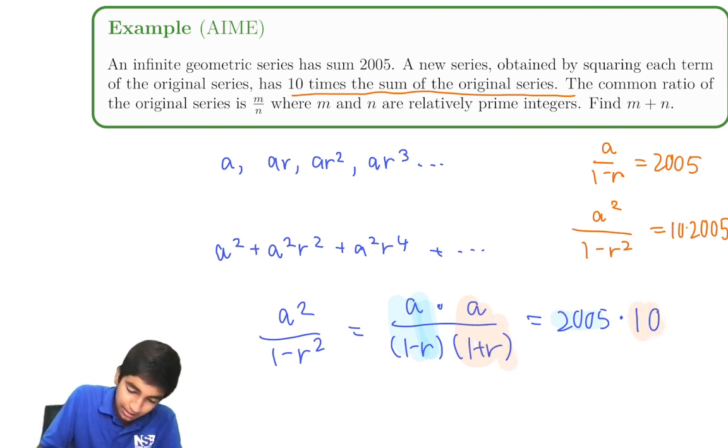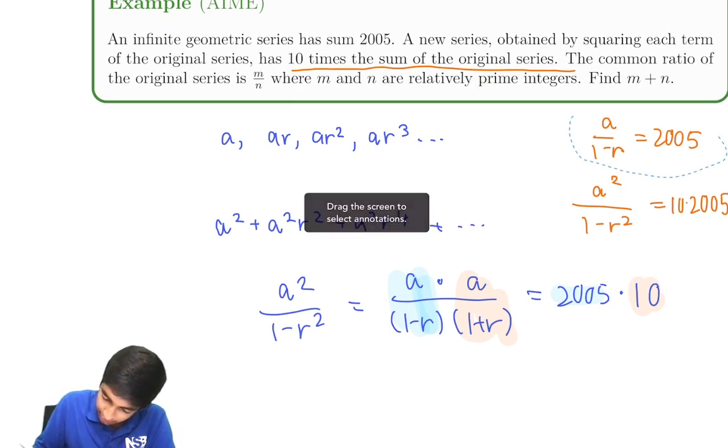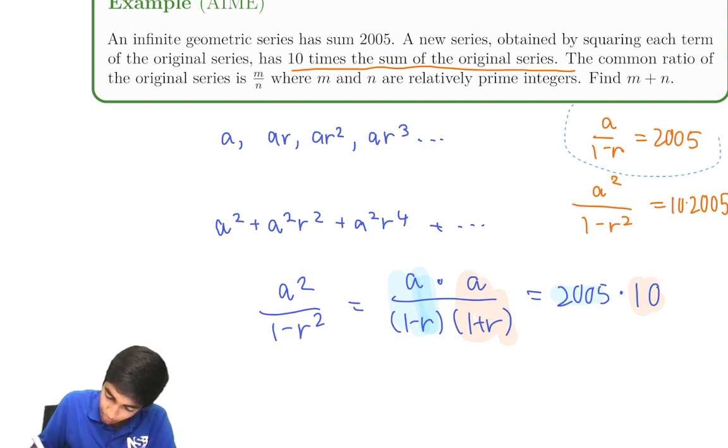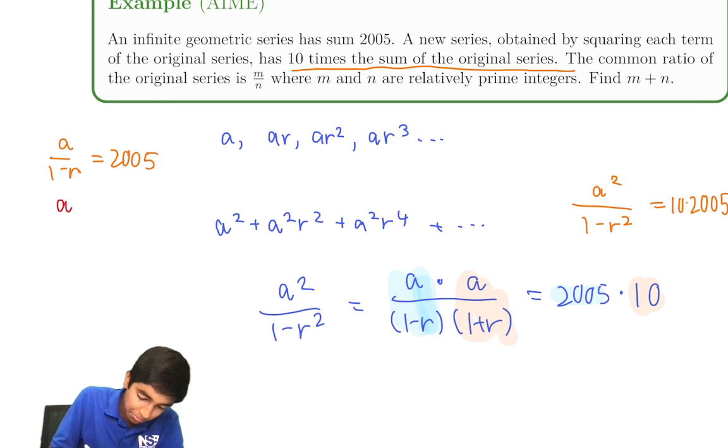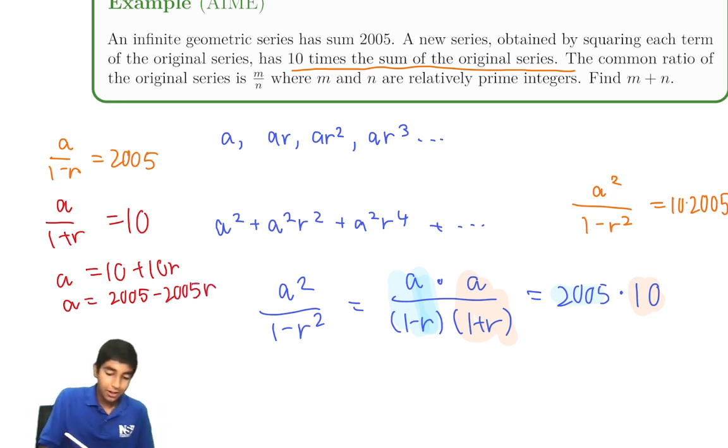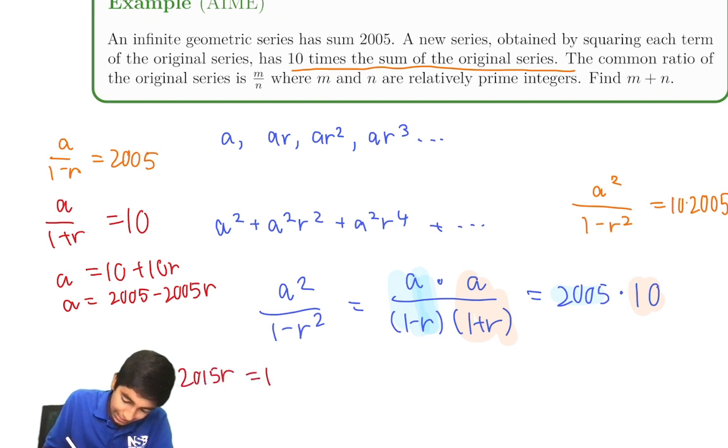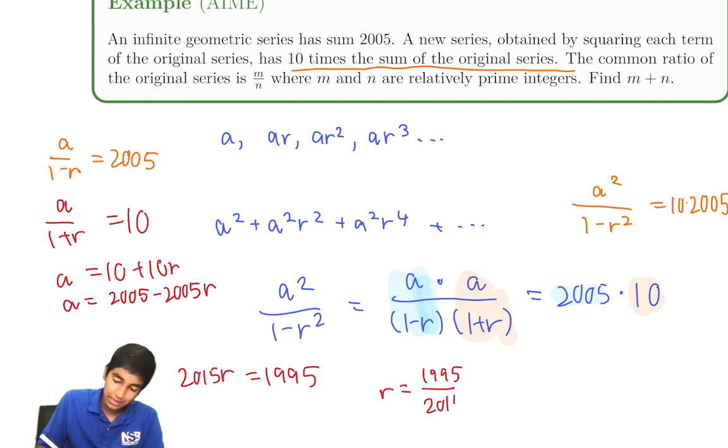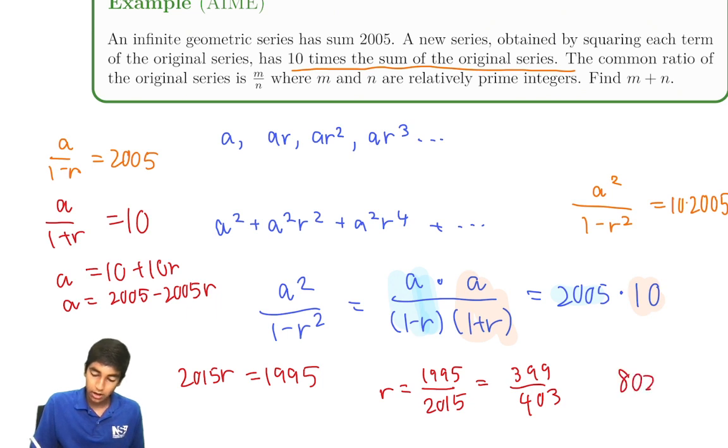That's wonderful. We know a over 1 minus r is 2005, and we know a over 1 plus r is 10. Let's cross-multiply and solve our two-variable equation. A equals 10 plus 10r. A equals 2005 minus 2005r. They're equal, so 2015r is 1995. So r is 1995 over 2015. Divide by 5, we'll end up with 399 over 403. Sum is 802, our answer. Because we're asked to find the sum of m plus n. 802 is our answer for this problem.